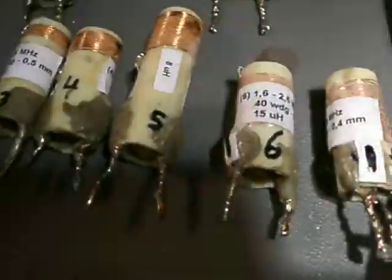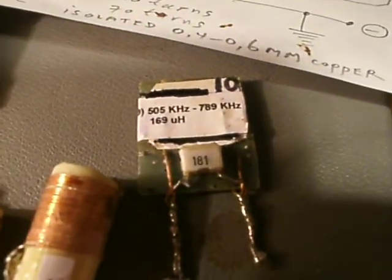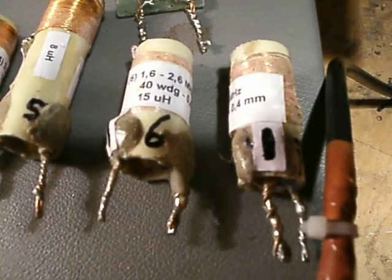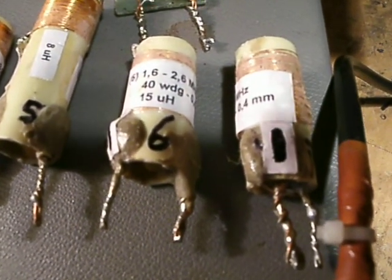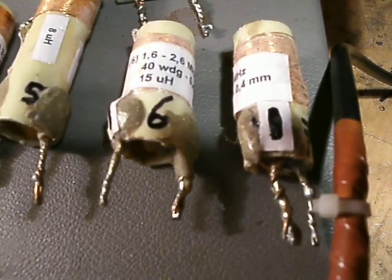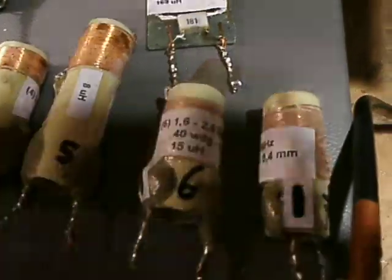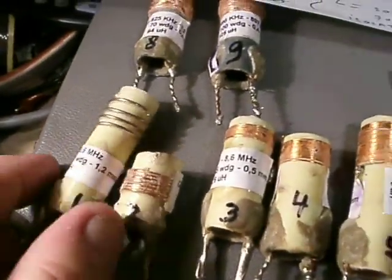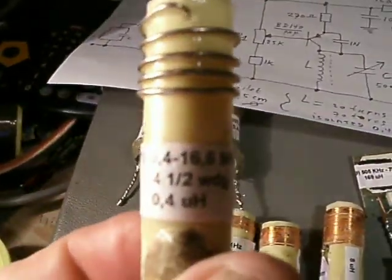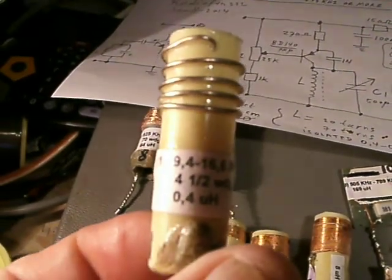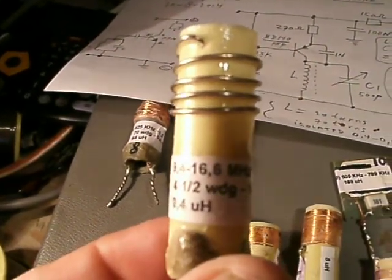to approximately 169 microhenry. This covers the whole radio frequency band, from approximately medium wave, perhaps somewhat long wave, to shortwave radio. For instance, the frequency that can be reached with this coil goes up to 16 megahertz.